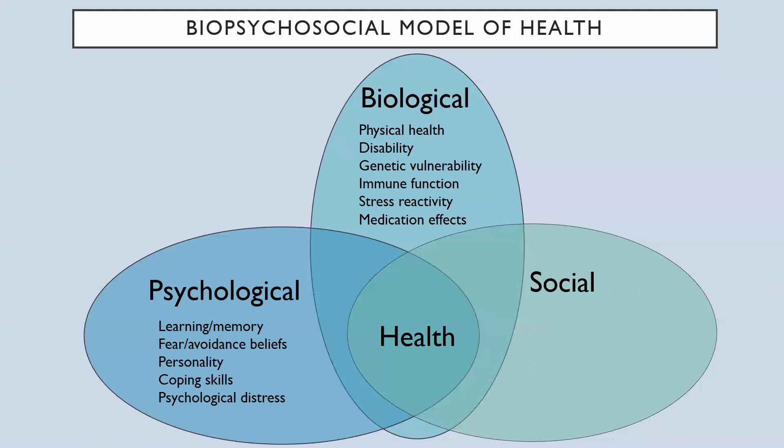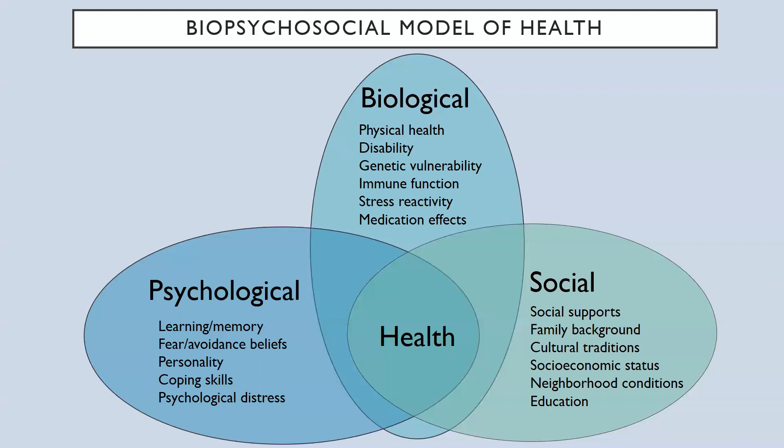Examples of social health include social supports, family background, cultural traditions, socioeconomic status, neighborhood conditions, and education. Together, these three components of health make up the biopsychosocial model of health. Although all three aspects of health are important for successful aging, this presentation will focus on providing listeners with greater understanding about the social determinants of health, and more specifically, the importance of human relationships to healthy aging.